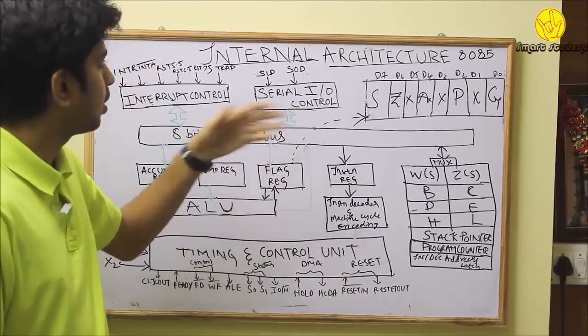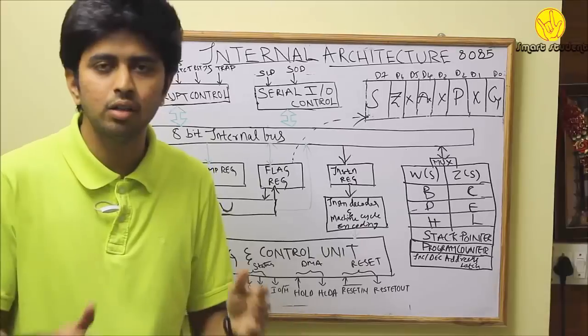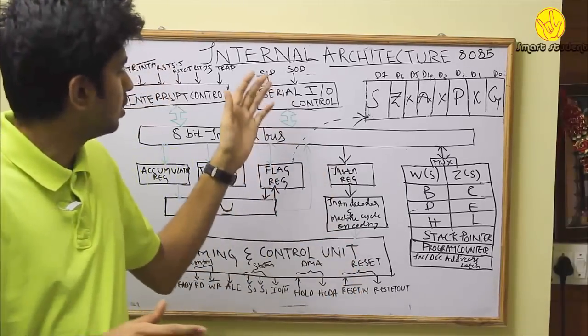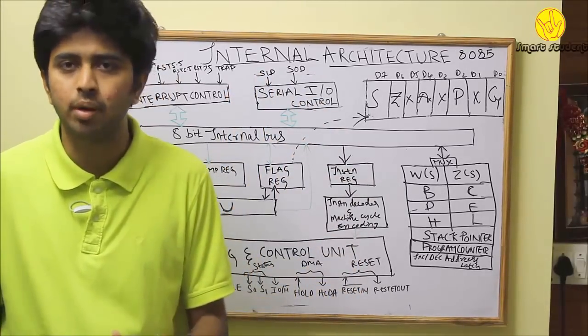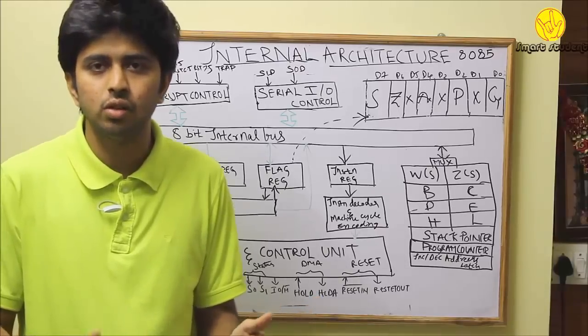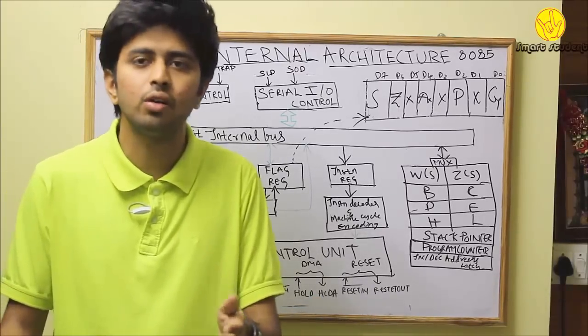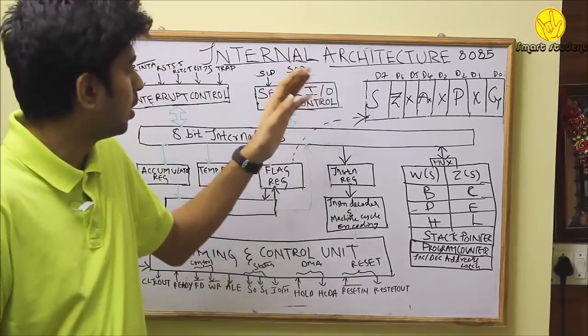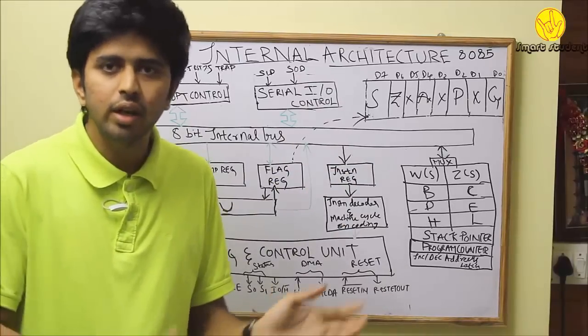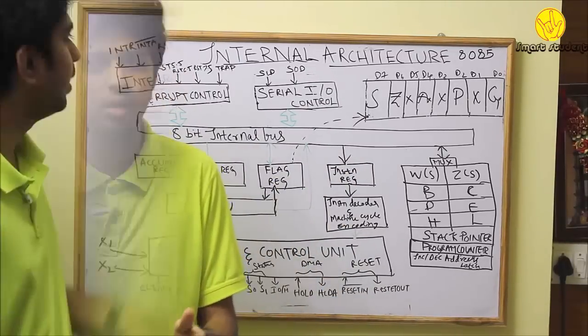Now coming to the serial input output control, it consists of SID pin and SOD pin. SID refers to the serial input data pin, SOD refers to the serial output data pin. Serial input data pin is used to receive the data from the device connected to the microprocessor. Serial output data pin is used to give the data to the devices connected to the microprocessor.